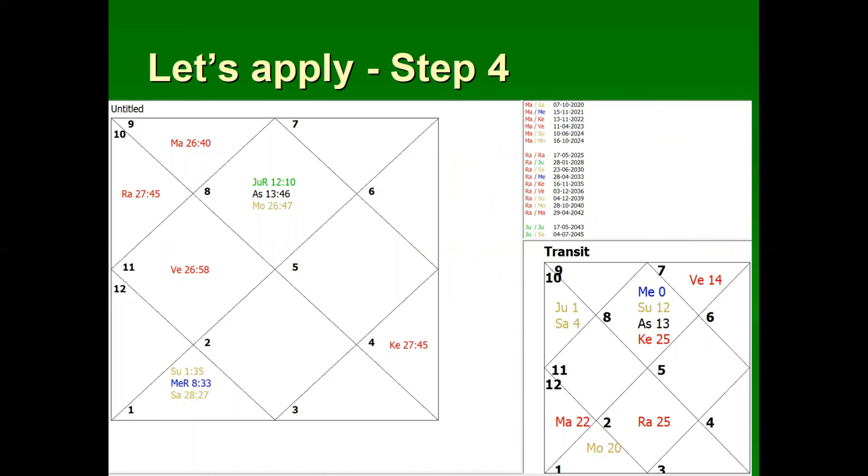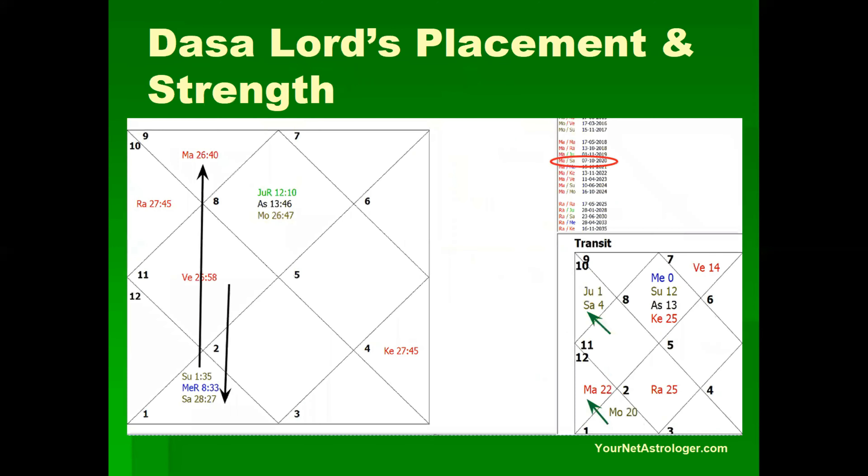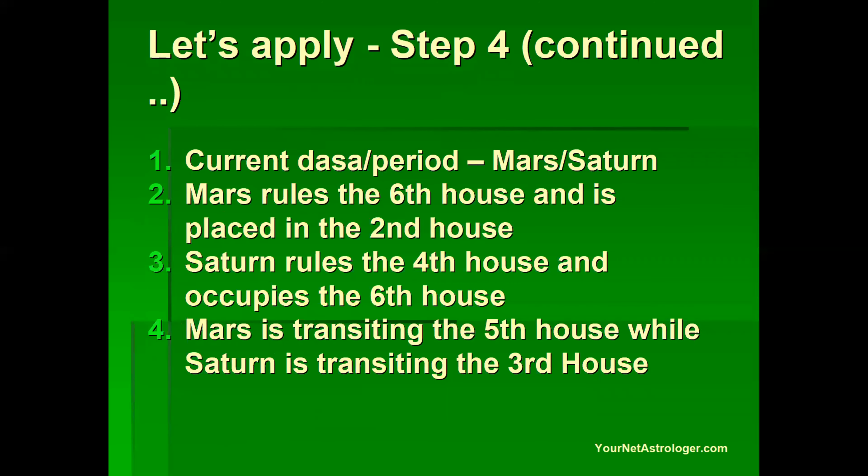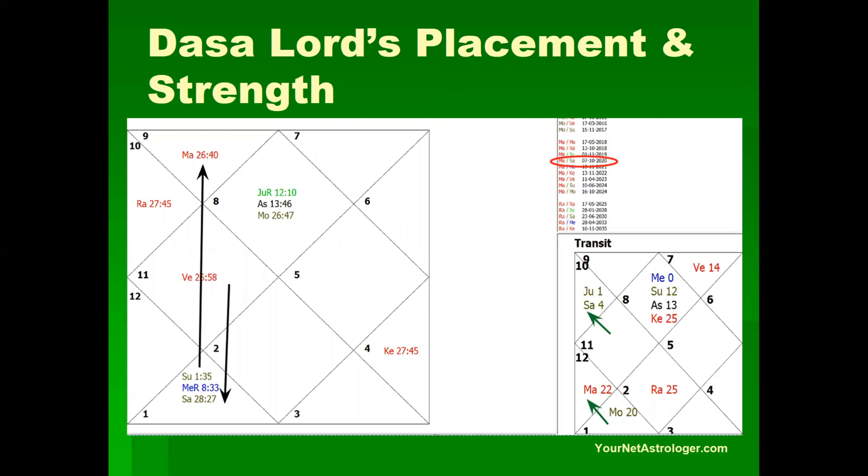We see the chart in totality along with the transit chart and let's first analyze the Dasha periods. Here main period of Mars and sub period of Saturn is running. In the natal chart Mars is placed in the second house, is lord of sixth house, a malefic planet. Saturn the sub period lord is a benefic planet but it is very weak and placed in the sixth house which is house of conflicts. Now let's see how these planets are faring in transit.